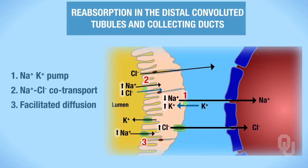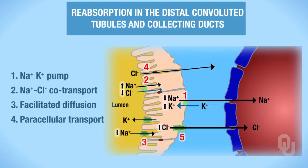So now we've reabsorbed sodium and done some chloride reabsorption. We also have another way to reabsorb chloride, which is number four — paracellular transport. Once we get chloride ions into the cytoplasm of the cell via the secondary co-transport, chloride ions are at a high concentration inside the cell moving toward a lower concentration. So number five here, chloride ions going through that channel, is facilitated diffusion across the basolateral membrane. Please note that potassium here is being secreted, and we're going to come back to potassium in a moment.